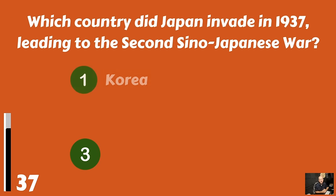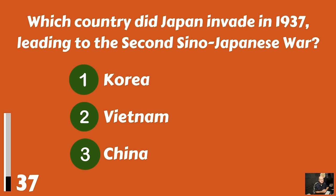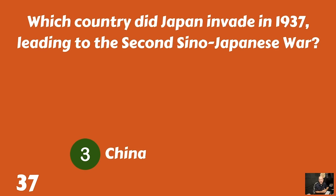Which country did Japan invade in 1937, leading to the Second Sino-Japanese War? Korea? Vietnam? Or China? And that would be China.